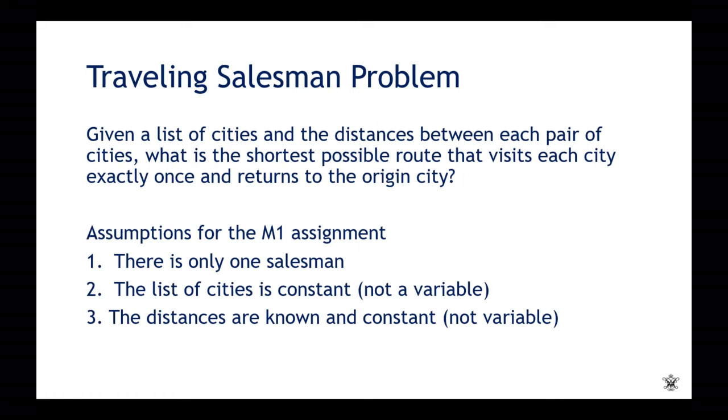So here is the traveling salesman problem. Given a list of cities and the distances between each pair of cities, what is the shortest possible route that visits each city exactly once and returns to the origin city?